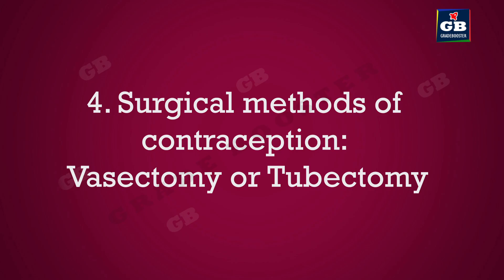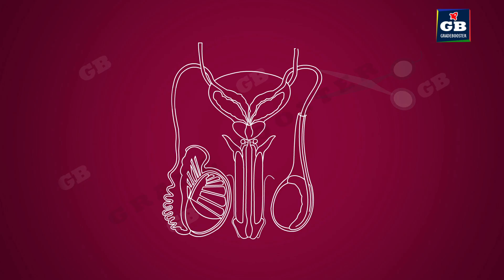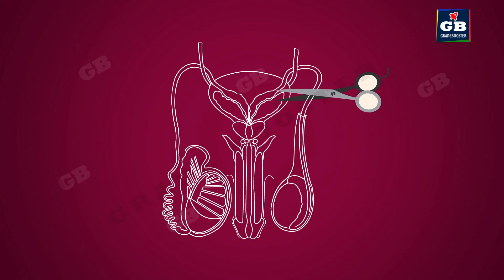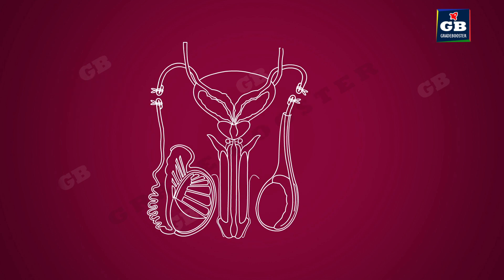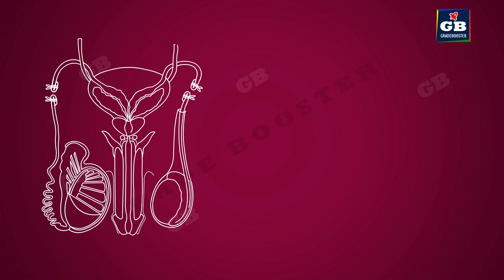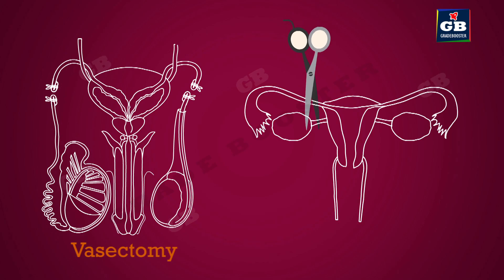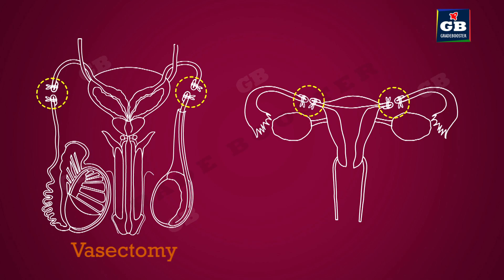Examples of surgical methods are vasectomy and tubectomy. In vasectomy, the vas deferens in the male is blocked by a small surgery so that sperm transfer is prevented. In tubectomy, the fallopian tube in the female is blocked by a small surgery so the egg cannot reach the uterus.